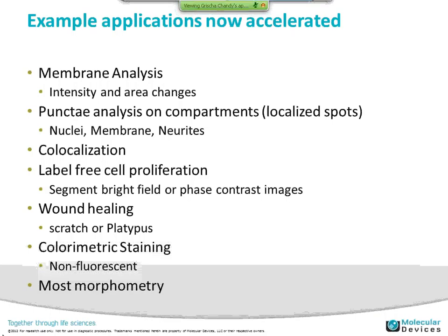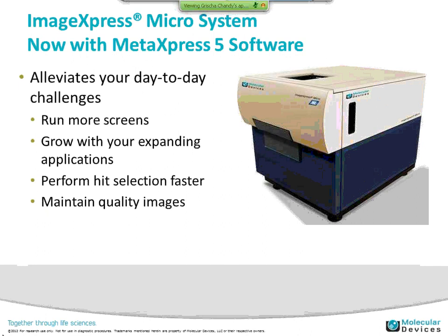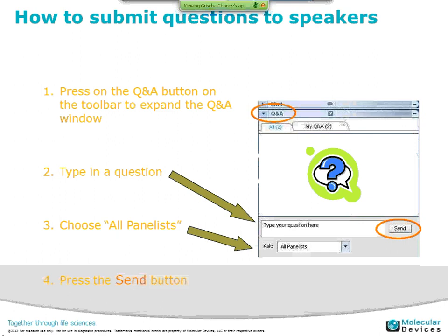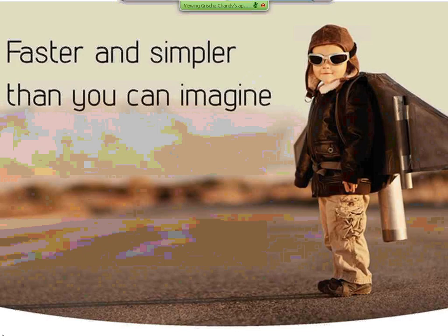The new ImageExpress Micro XL with MetaExpress 5 allows you to run more screens because you collect fewer sites, expands your application space with the software, and provides tools to perform hit selection faster. We pride ourselves on maintaining high-quality images and supporting long live-cell experiments. Please submit your questions now — Jane has hopefully gotten lots of questions from you.